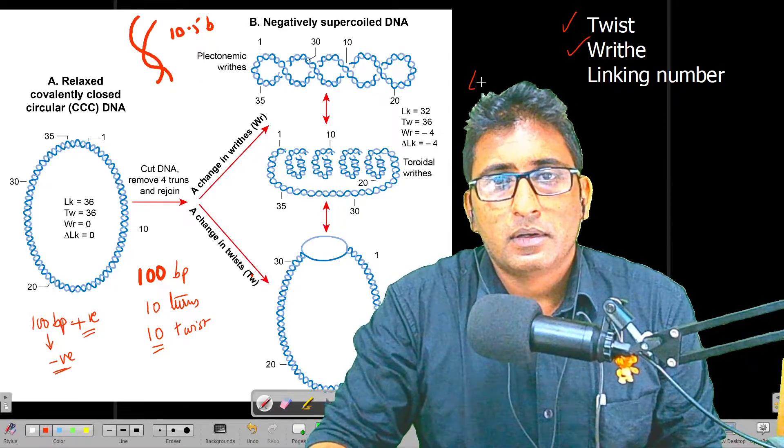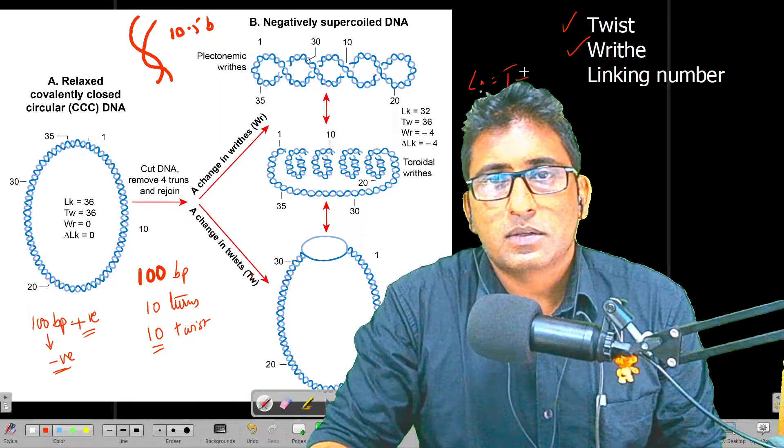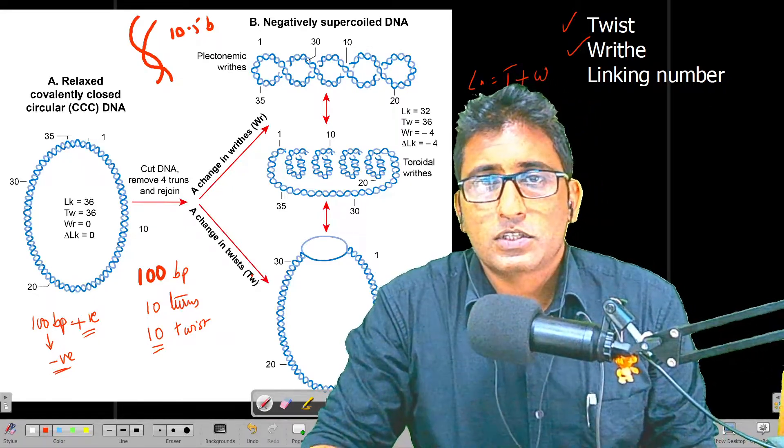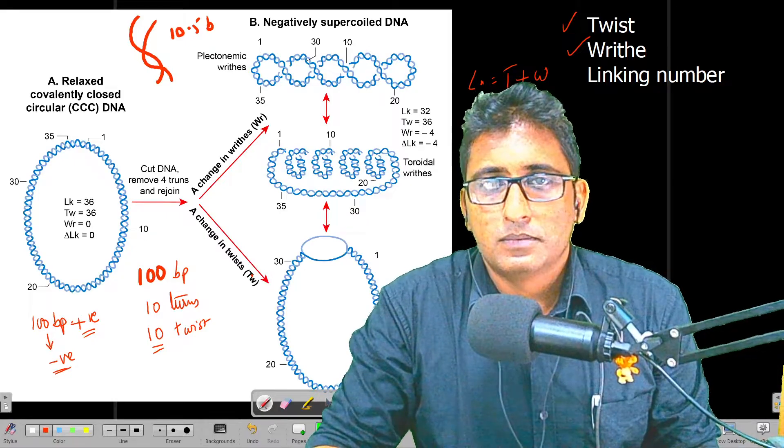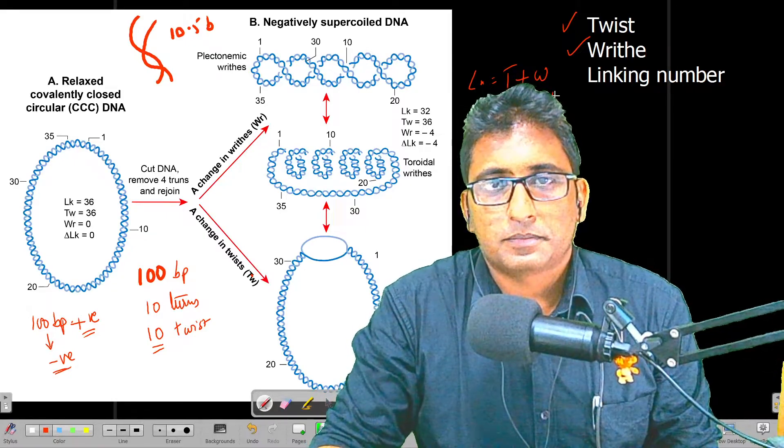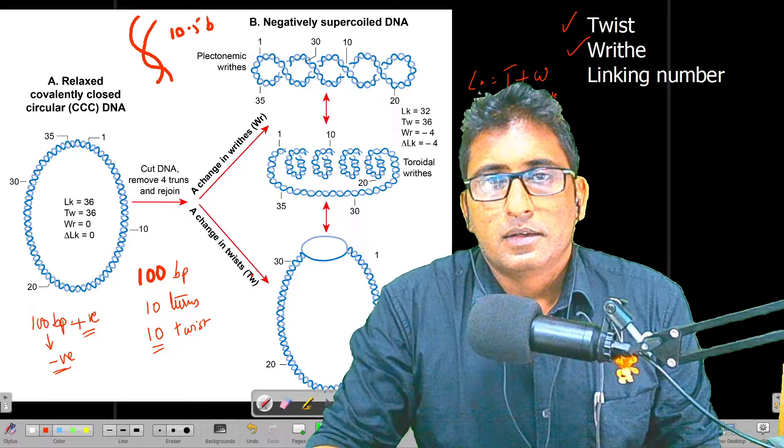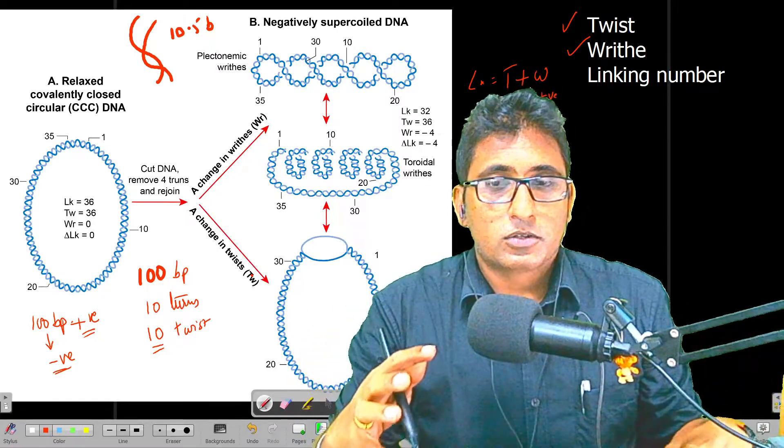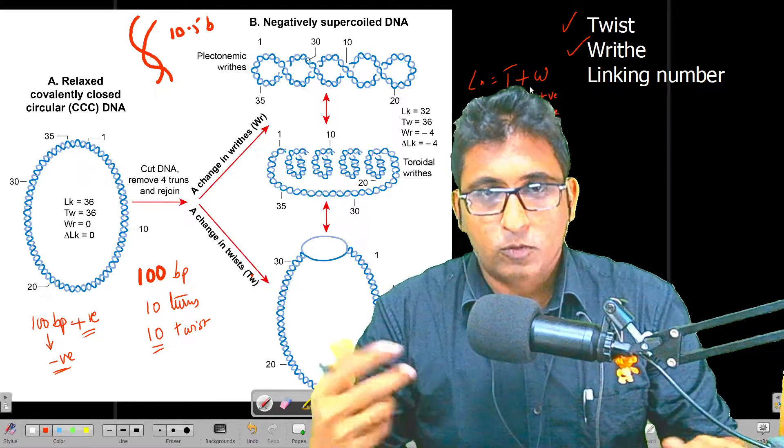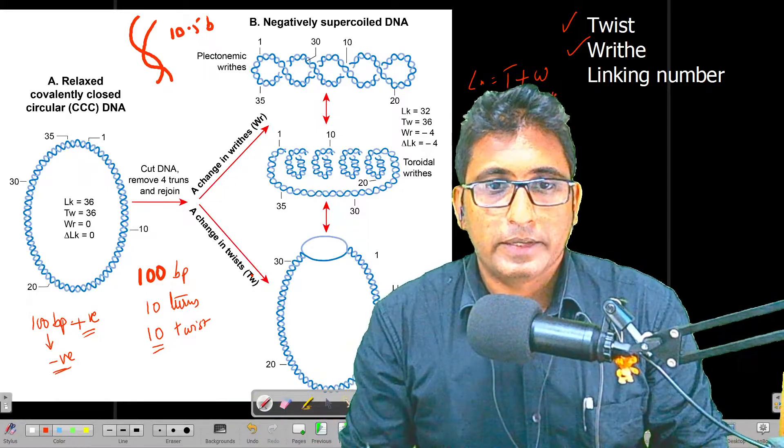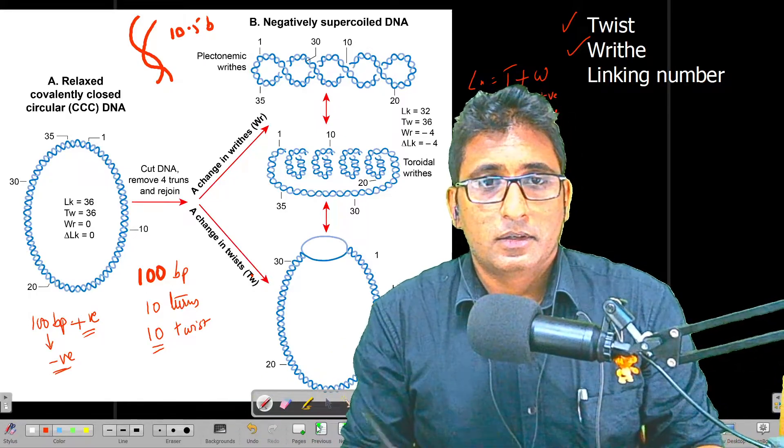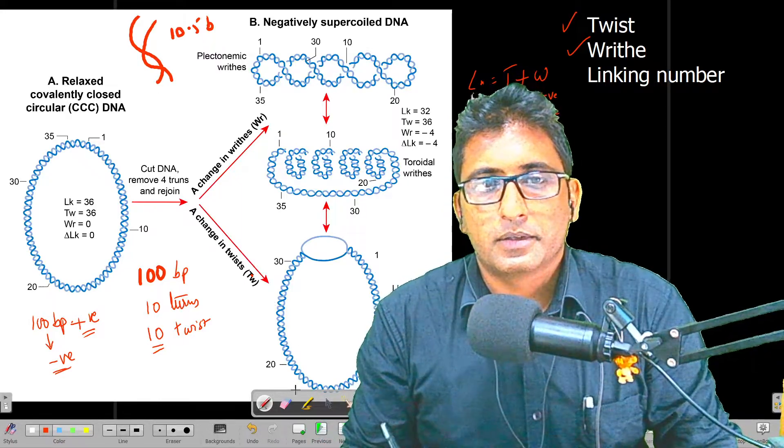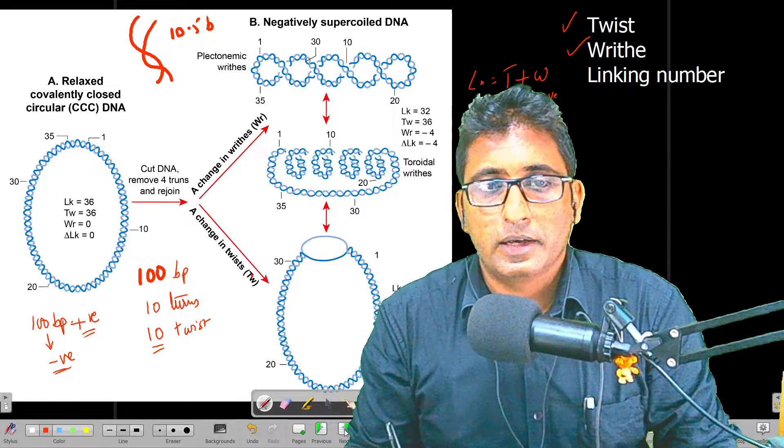There are several important things that we need to remember. I hope you understood what is twist and what is writhe. Linking number is equal to twist plus writhe. So twist can be positive or negative, so can writhe.